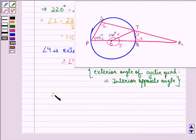Therefore, angle 4 equals angle RQT, which is 110 degrees.